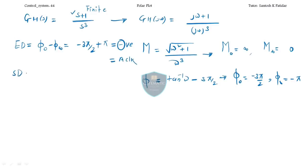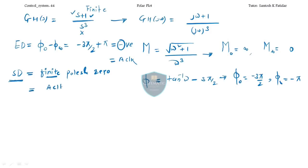Now for the starting direction — I think last time there was some confusion, so let me clarify. The starting direction is always determined by finite poles and zeros only. Do not look at poles or zeros at origin. In this question there are no finite poles, only a finite zero. If you have a finite zero, the starting direction is anticlockwise; if you have a finite pole, it is clockwise.